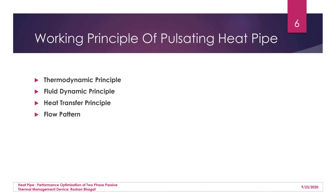Heat transfer takes place due to capillary diameter. In a pulsating heat pipe, the smaller diameter causes alternate liquid and vapor slugs to move. This slug movement is possible because of the pressure difference caused by the temperature difference between the evaporator and condenser sections, resulting in pulsating flow. Sensible heat is associated with the liquid phase and latent heat is associated with the vapor phase.